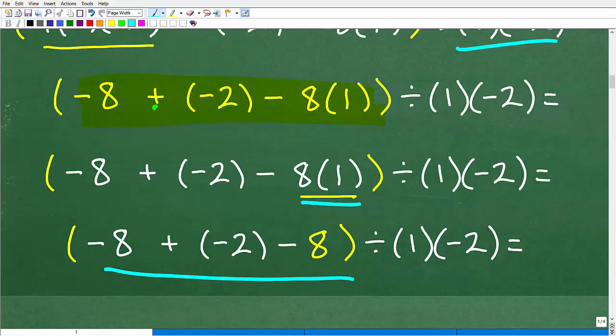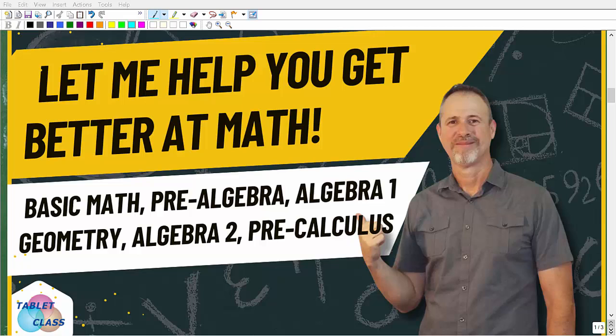We have negative eight plus negative two minus eight divided by one times negative two. Now in real life, for those of you that are math students or pretty good at math, you could simplify some of this stuff. I'm kind of dragging this out a little bit just so I can kind of keep a certain focus on the problem. Now, before we continue on, if you want to get better at math, you definitely can. But the key is to find a teacher that gives you clear and understandable instruction.